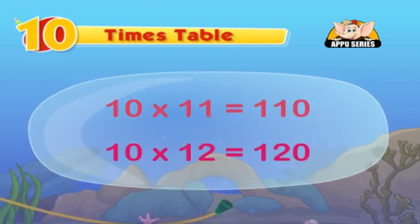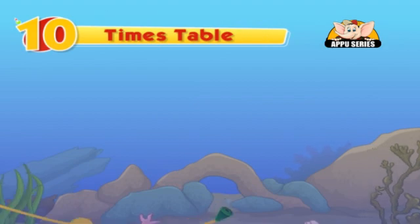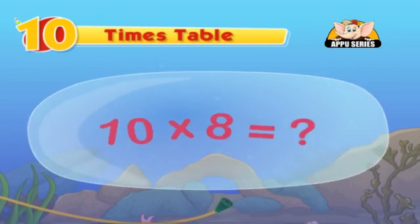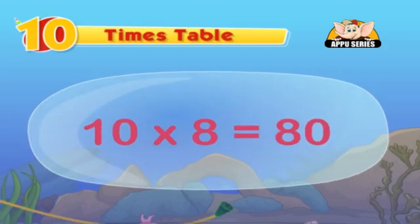Add a zero to the number, multiply and see. Great! So what's 10 into 8? That's right, it's 80.